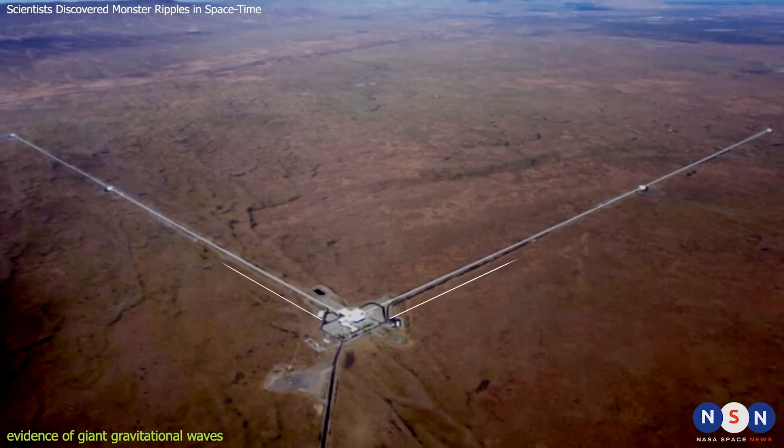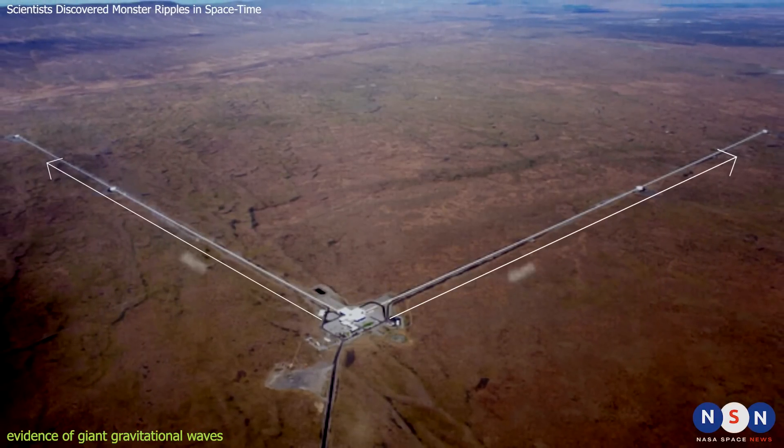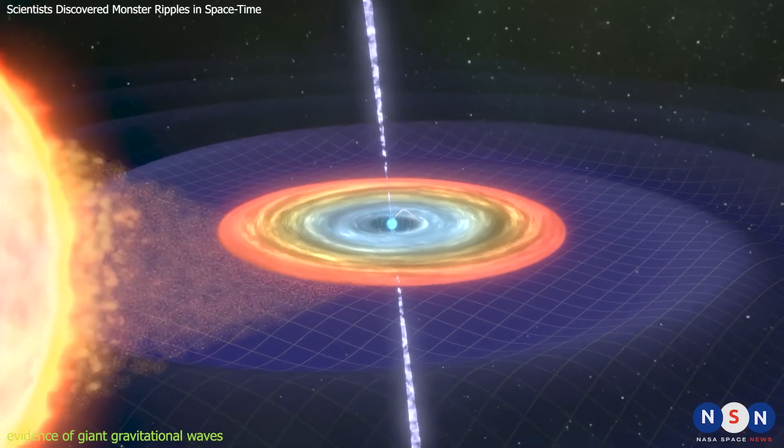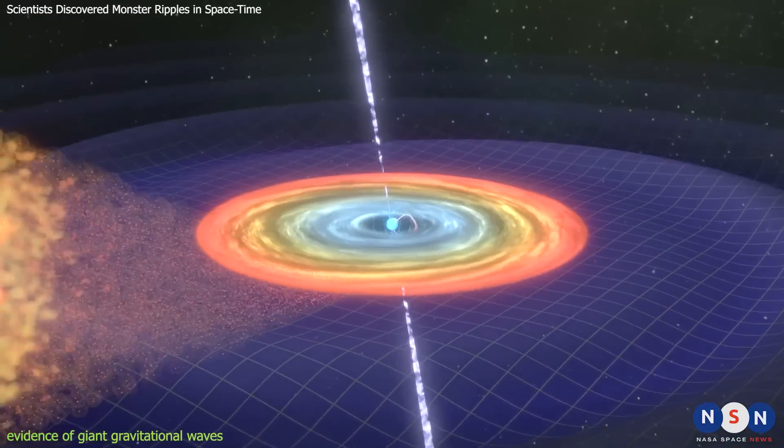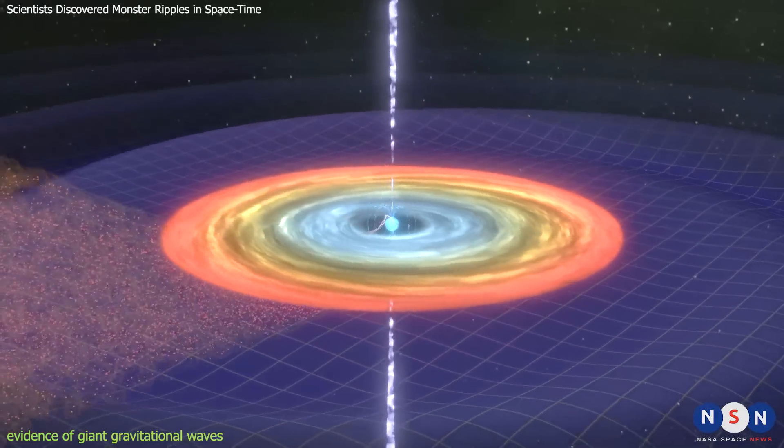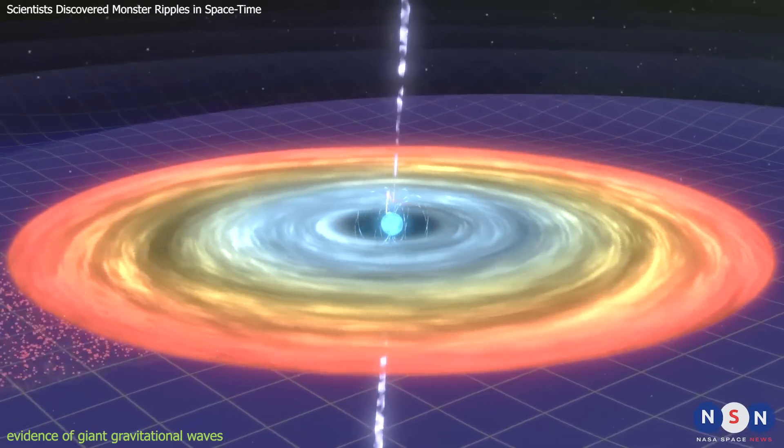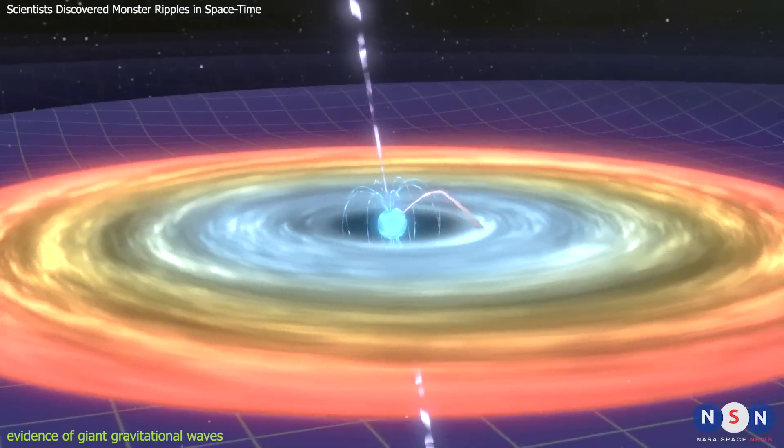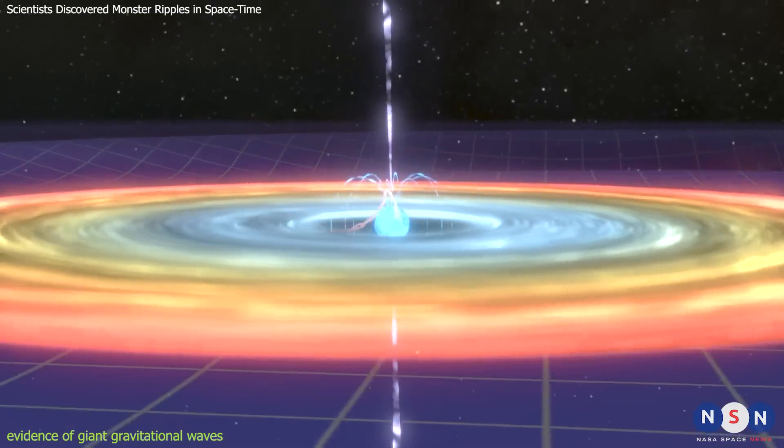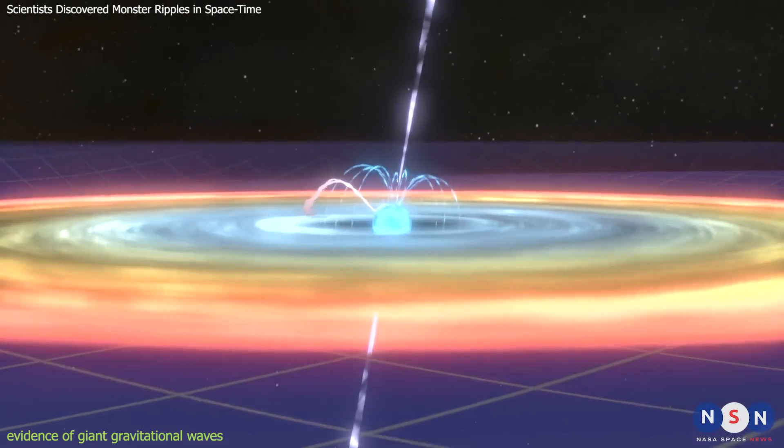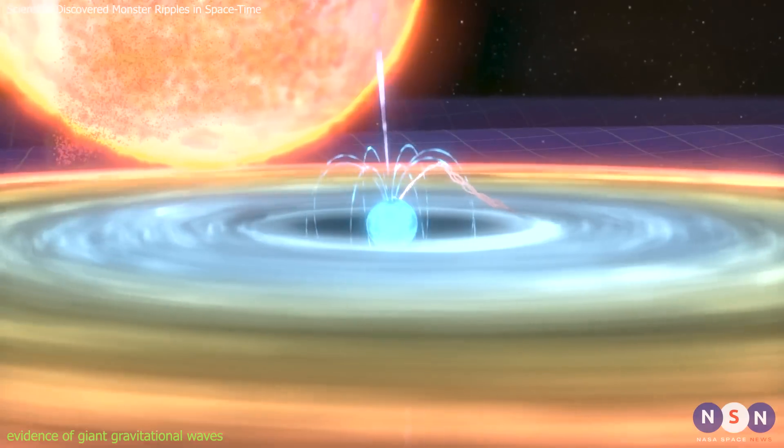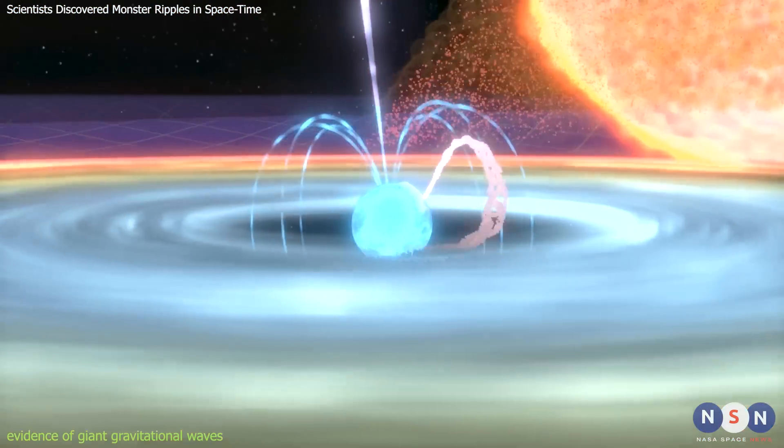How can we possibly detect such faint signals? Well, we can't use lasers or mirrors for this task. Instead, we need to use special beacon stars called millisecond pulsars. These are rapidly spinning neutron stars that emit beams of radio waves from their magnetic poles. As they rotate, they sweep these beams across the sky like lighthouses. We can observe these beams as regular pulses of radio signals that arrive at Earth with clock-like precision.